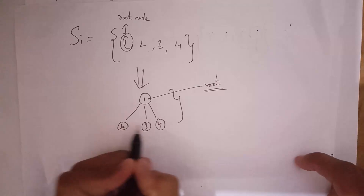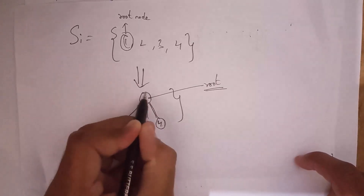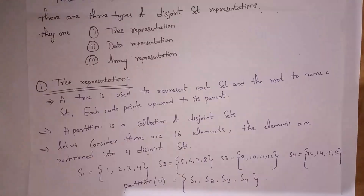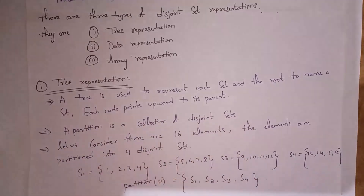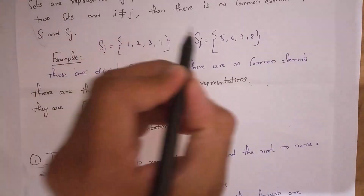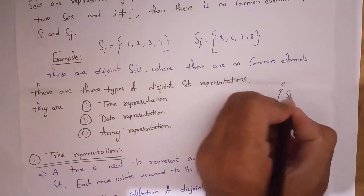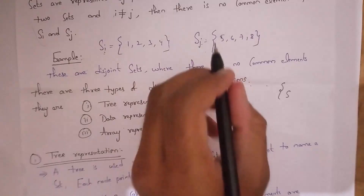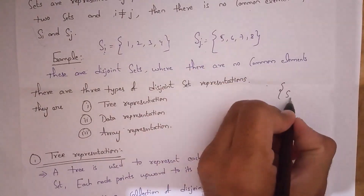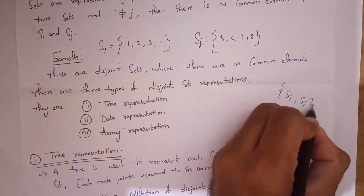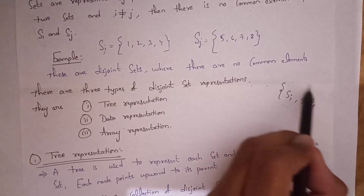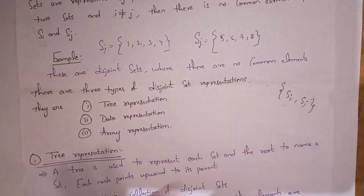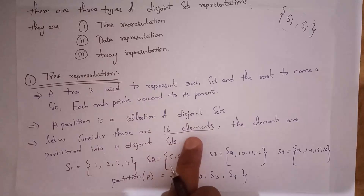In this tree, each node points upward to its parent node, that is 1. Next, you need to know what a partition is. A partition is a collection of disjoint sets. For example, Si and Sj are two disjoint sets, and collecting them together as {Si, Sj} forms a partition.